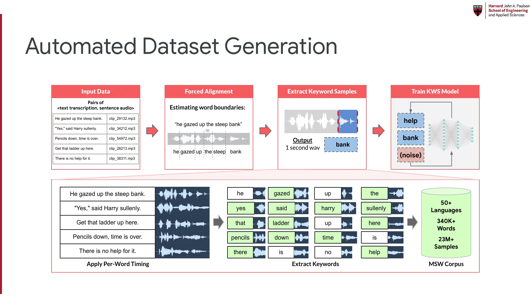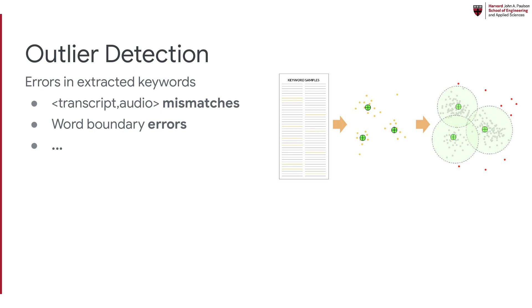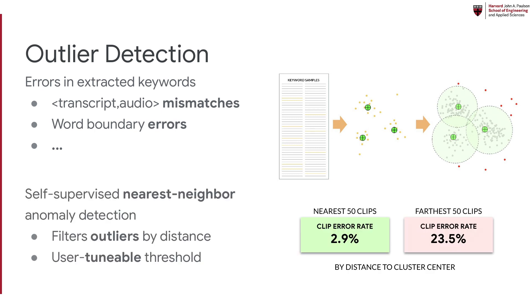These isolated keywords can then be used to train keyword spotting models. There are several potential sources of error in automated keyword extraction, such as transcript mismatches and estimated word boundary errors. Thus, we also provide a self-supervised nearest neighbor anomaly detection algorithm to automatically filter out erroneous samples using a distance metric. Evaluated on 75 keywords in English, Spanish, and German, we observe that an average of 23% of the furthest 50 clips sorted by distance are erroneous. Users of our dataset can tune their desired threshold for filtering.